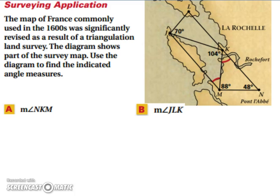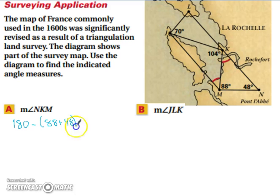Let's look at a surveying application. The map of France, commonly used in the 1600s, was significantly revised as a result of a triangulation land survey. The diagram shows part of the survey map; use the diagram to find the indicated angle measures. We want to find the measure of angle NKM. Since a triangle is 180 degrees, we can take 180 and subtract 88 and 48 to get 44 degrees.